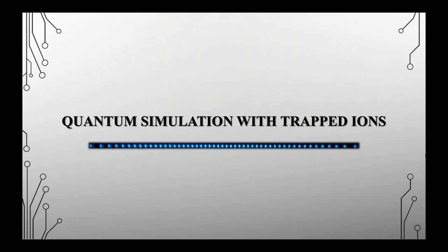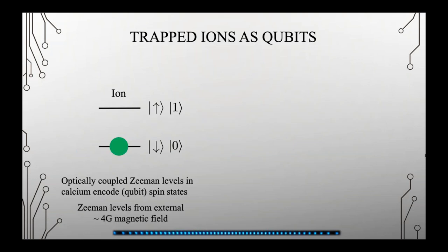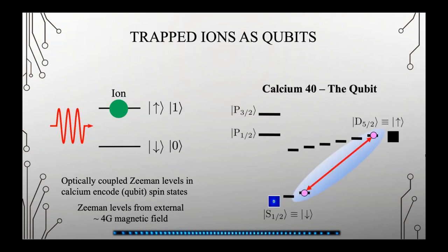Now let's move to the experiment. We use an ion instead of just any atom, because I work with trapped ions. In the Blatt group, we use calcium, which has a very simple level structure. The zero or down state is the ground state of the ion — the S1/2 state — and the excited state, the one, is the D5/2 state. You can couple between these two using a 729 nanometer laser, which we call the qubit laser. To detect which state we're in, we use a laser at 397 nm: if you're in the S state, the ion fluoresces brightly; if you're in the D state, you remain dark. This lets us image a long string of ions in the trap, with everything fluorescing when all ions are in the S state.